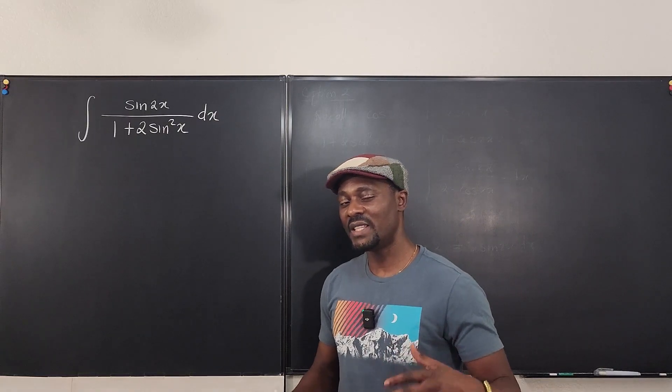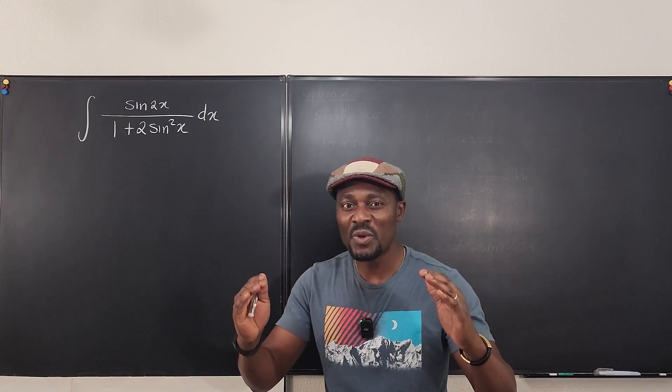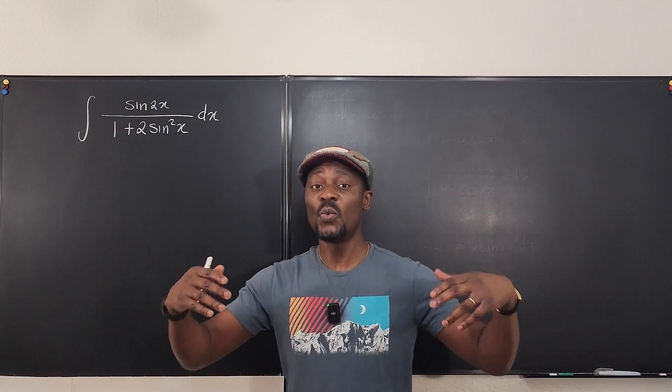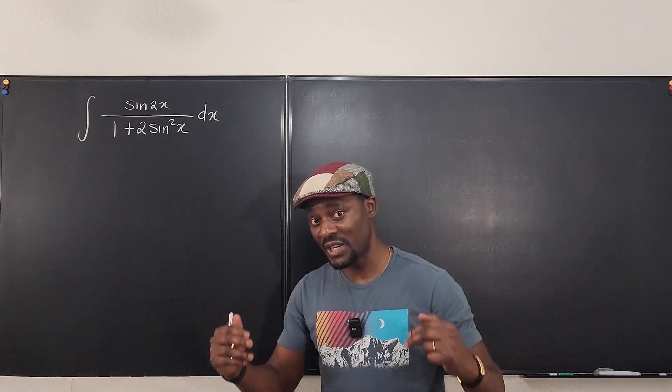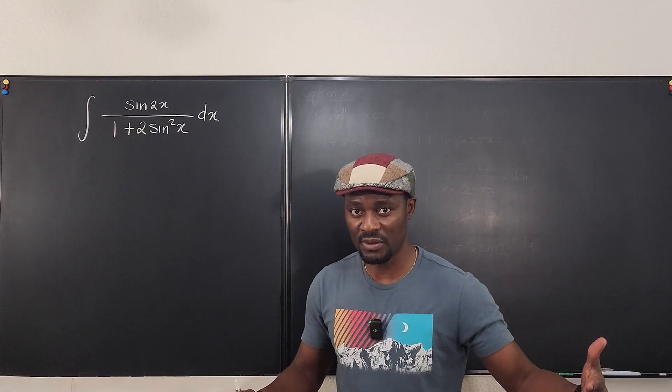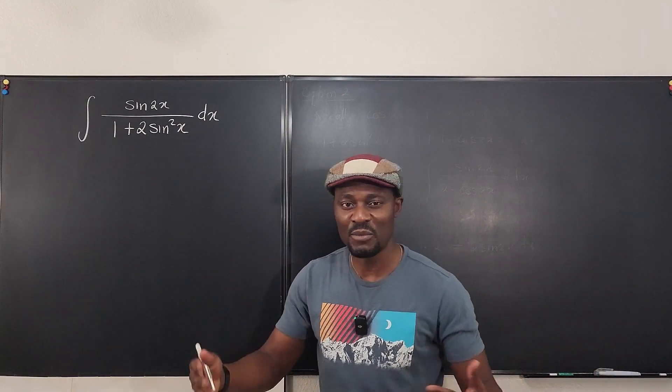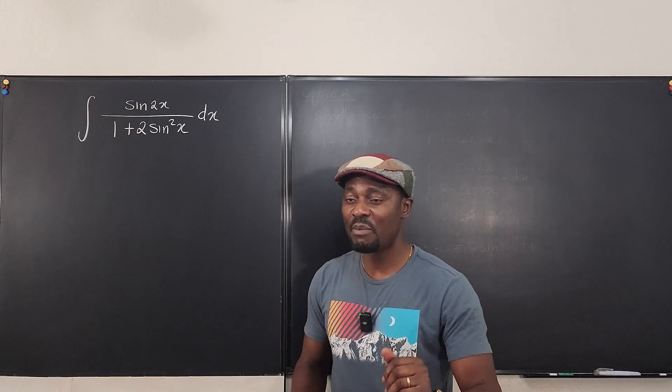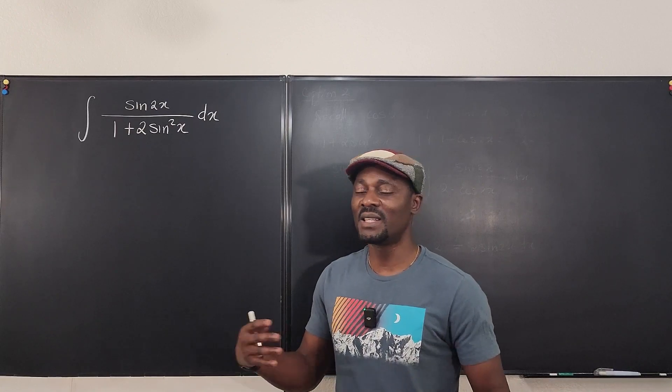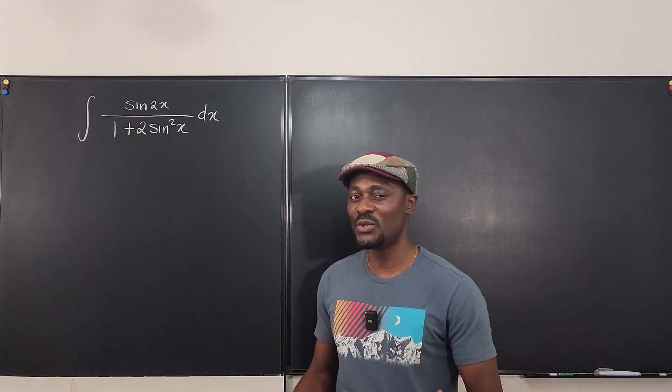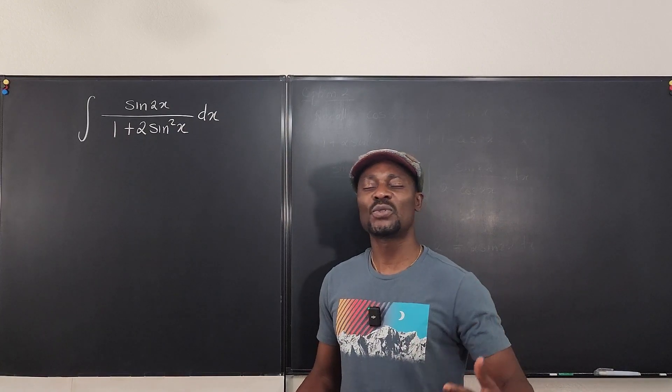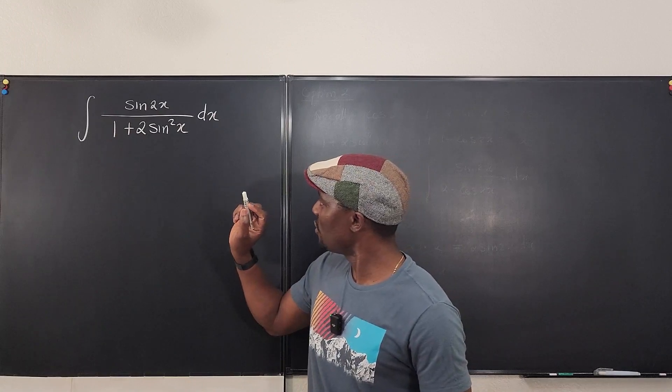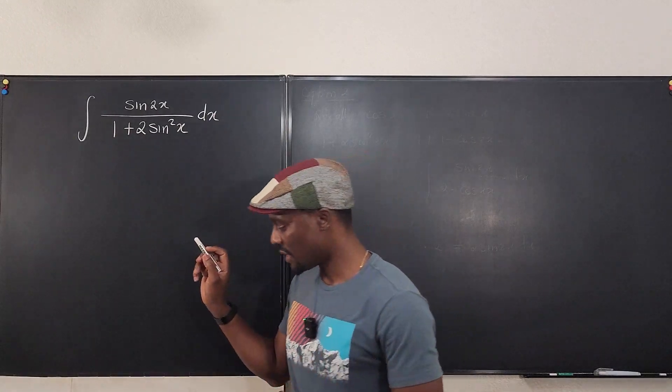Generally, integrating a rational expression must start with the idea that I'm going to make the denominator my U because the numerator will contain the derivative of the denominator, or at least be a scalar multiple of it, or there's just some kind of manipulation I can do to make that happen. If that does not happen, maybe you need to do something else. But U substitution for a rational expression almost always saves the day. So we're going to make the denominator our U and see what happens.